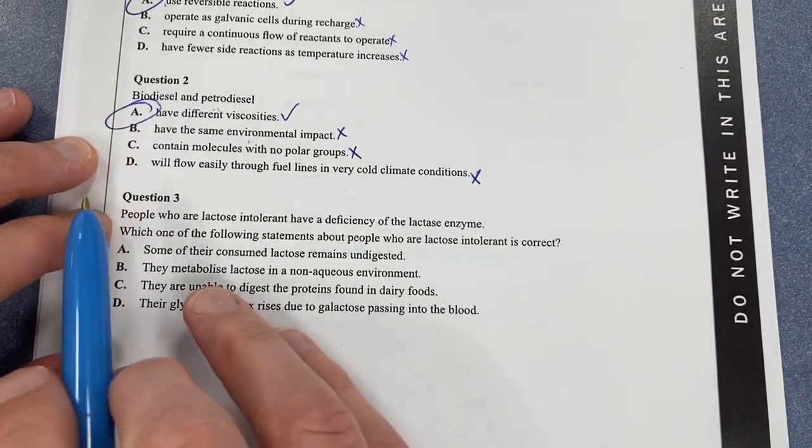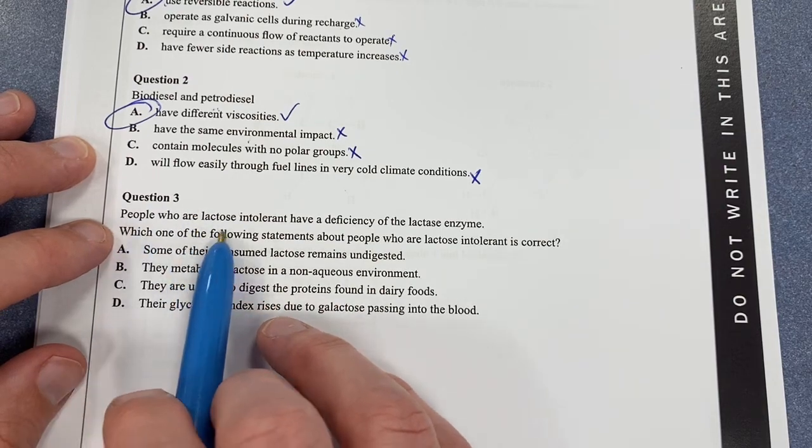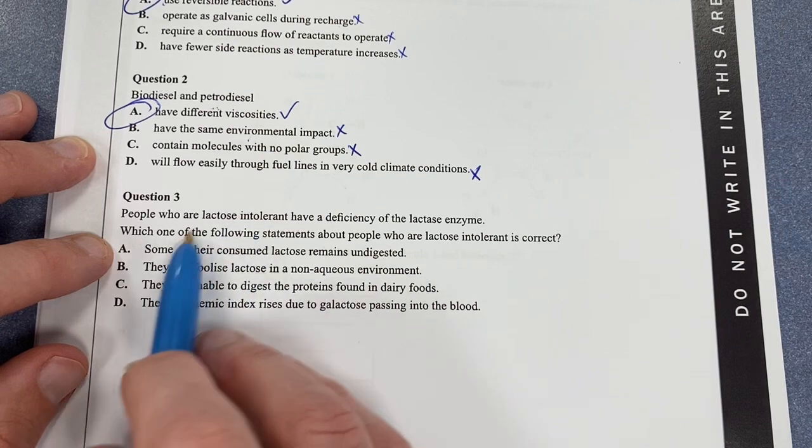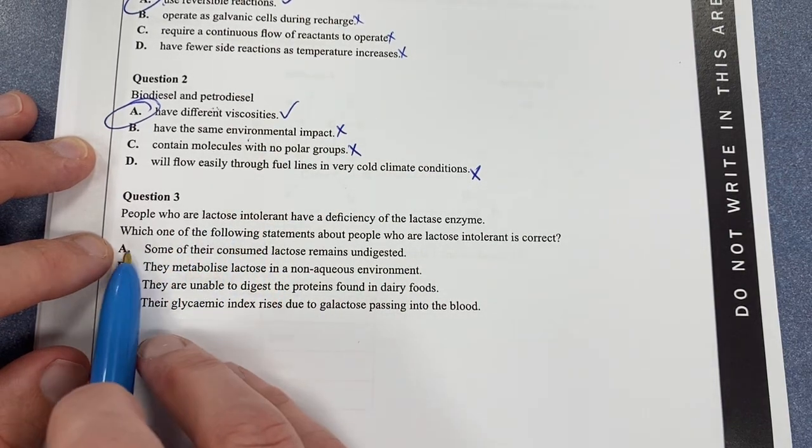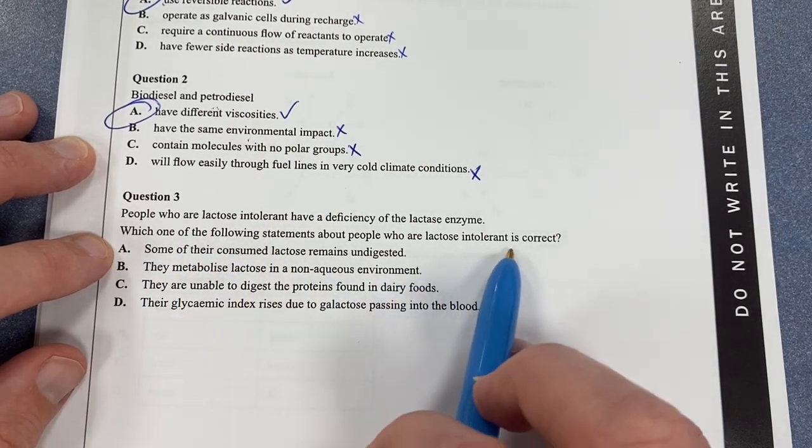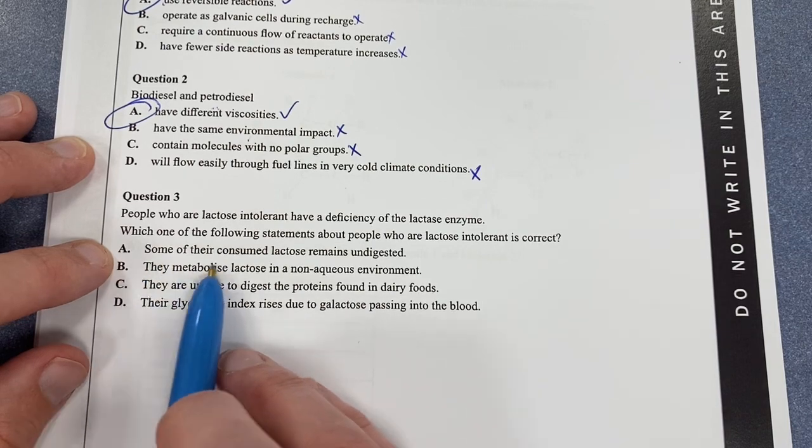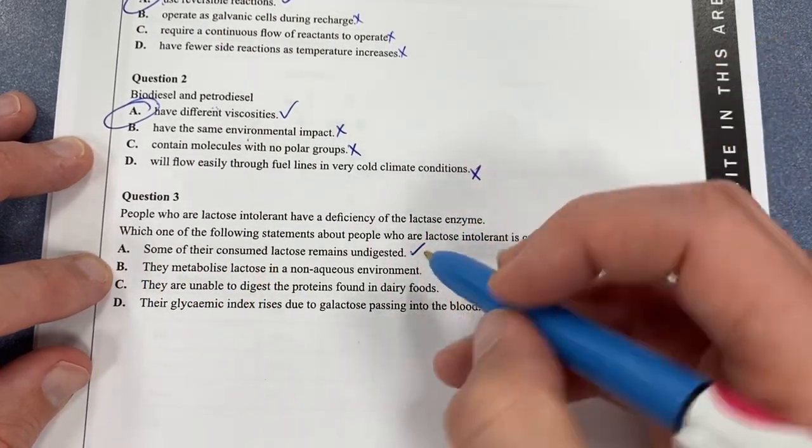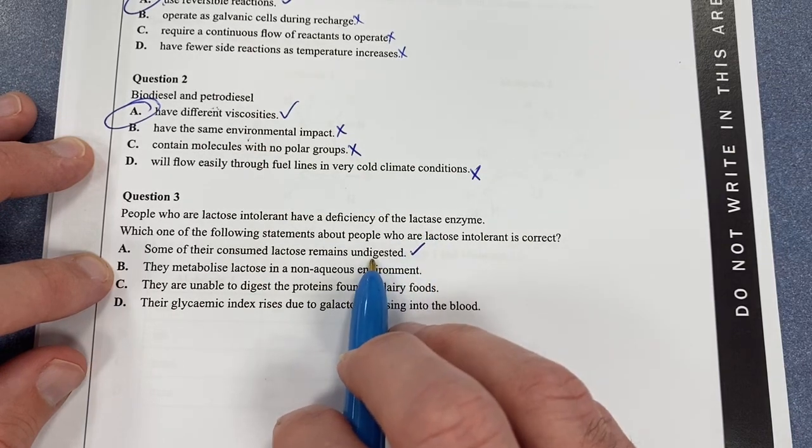We'll move on to question three. People who are lactose intolerant have deficiencies in their lactase enzyme. We should know about that from our food chemistry. Which of the following statements is correct? Some of their consumed lactose remains undigested - that's kind of true because we don't have lactase to digest it. That's true.